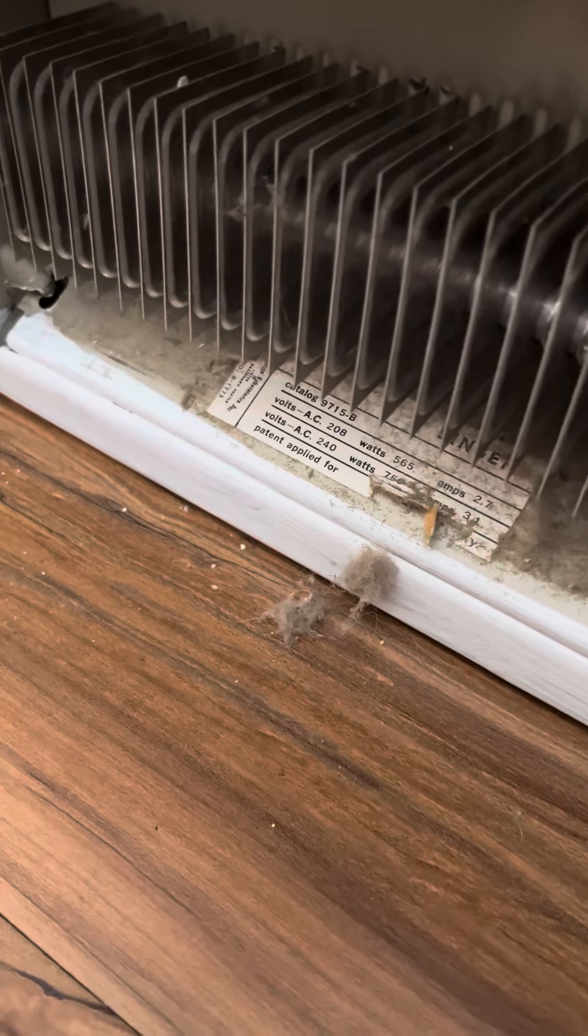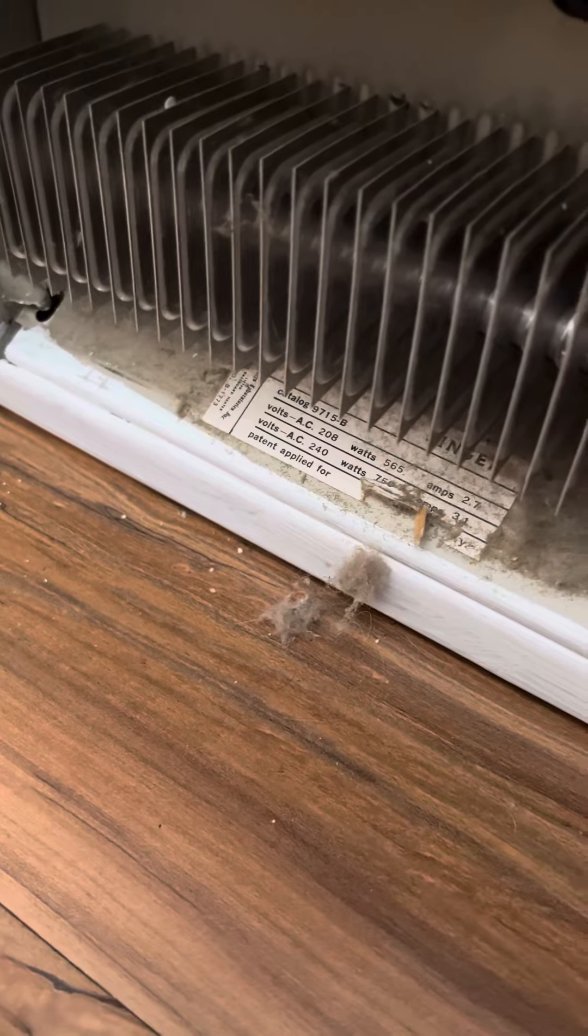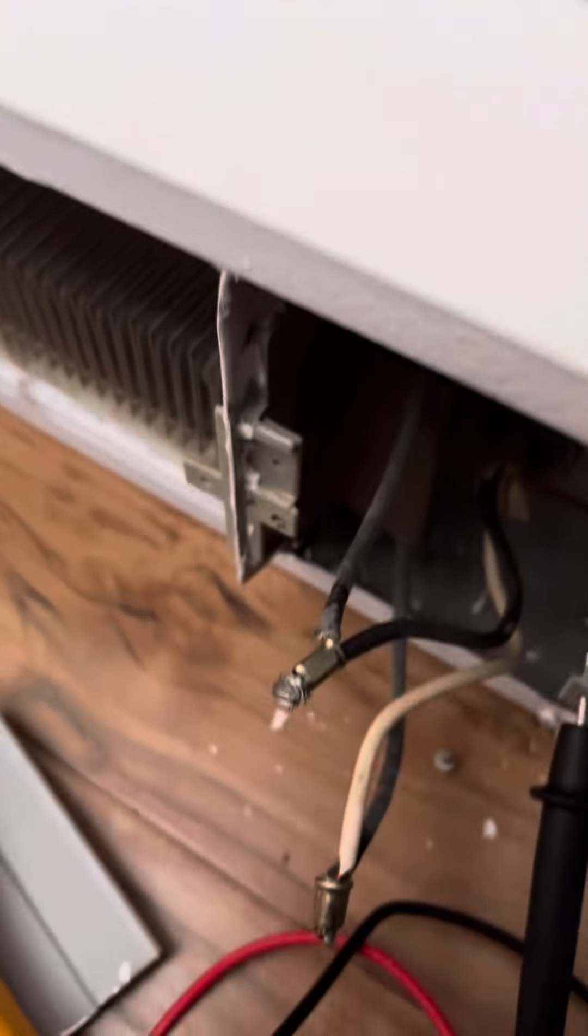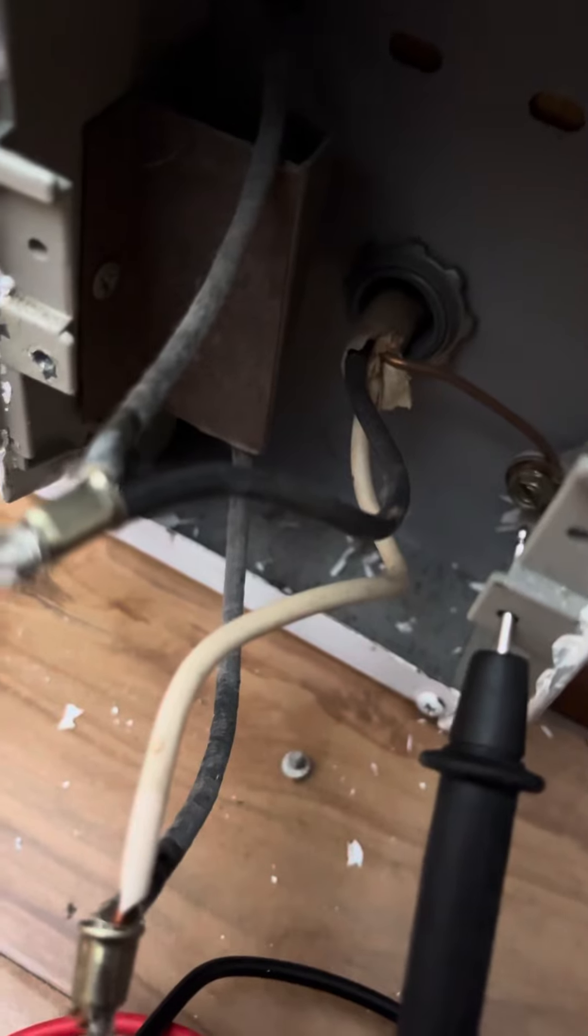It says 240 volts. So this is a 240 volt electric baseboard heater. Now you need to check the voltage that's coming in. You see the wires from the back - two wires coming in plus the ground.